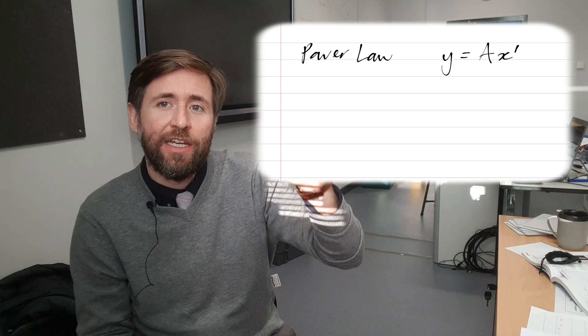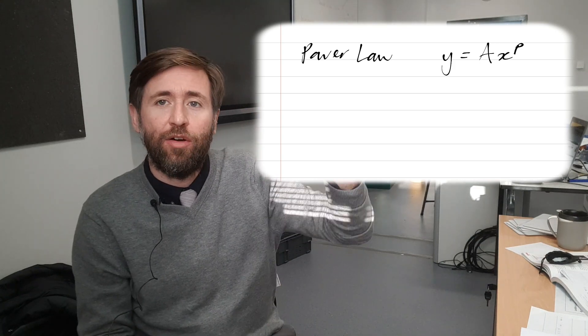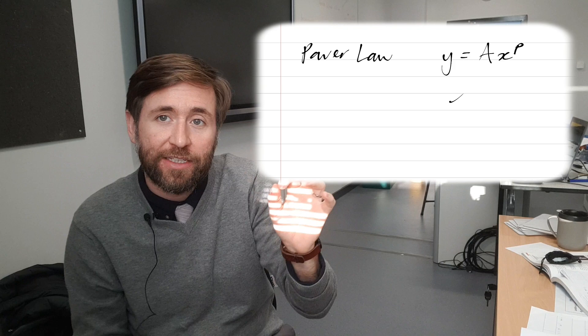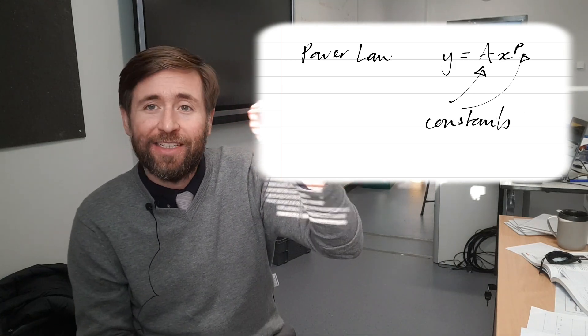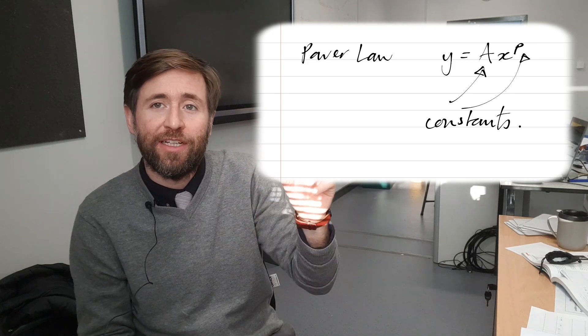Power law is essentially the exponent, the indice of one of the variables, is a fixed number, a constant. So if you know that you've been told this is a constant and that is the indice of a variable, then that's a power law.